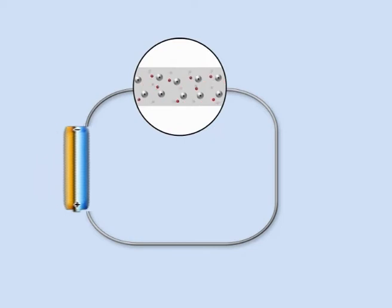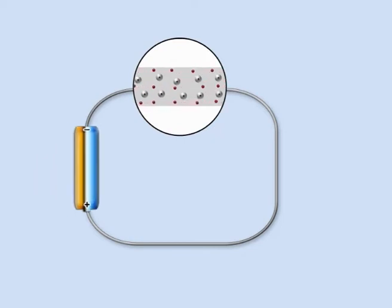If you connect the wire to a battery to create a circuit, electrons start to flow along the wire as electrons jump from one atom to the next.